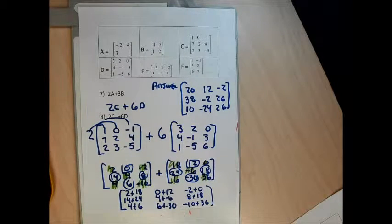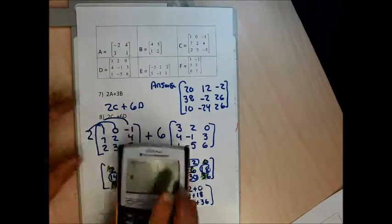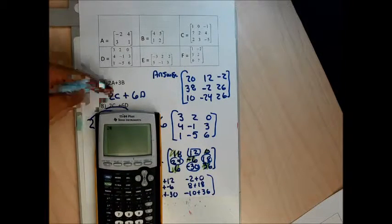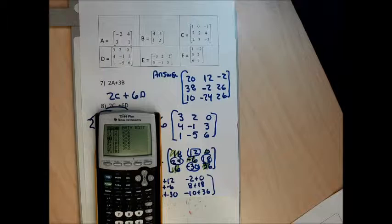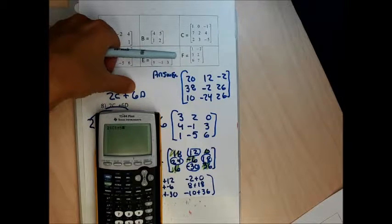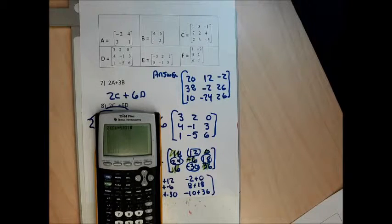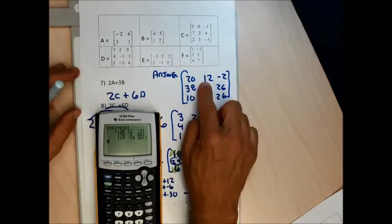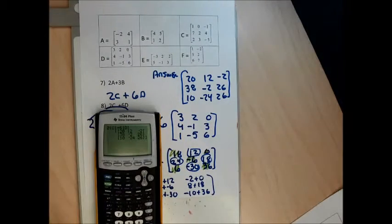Let me double check on my calculator. I type 2, then second matrix go to C and hit enter — there's my 2C. Then I type the plus sign and 6, then second matrix go to D and hit enter. I see 2 times matrix C plus 6 times matrix D. When I hit enter: 20, 12, negative 2; 38, negative 2, 26; 10, negative 24, 26. My answer is perfect.